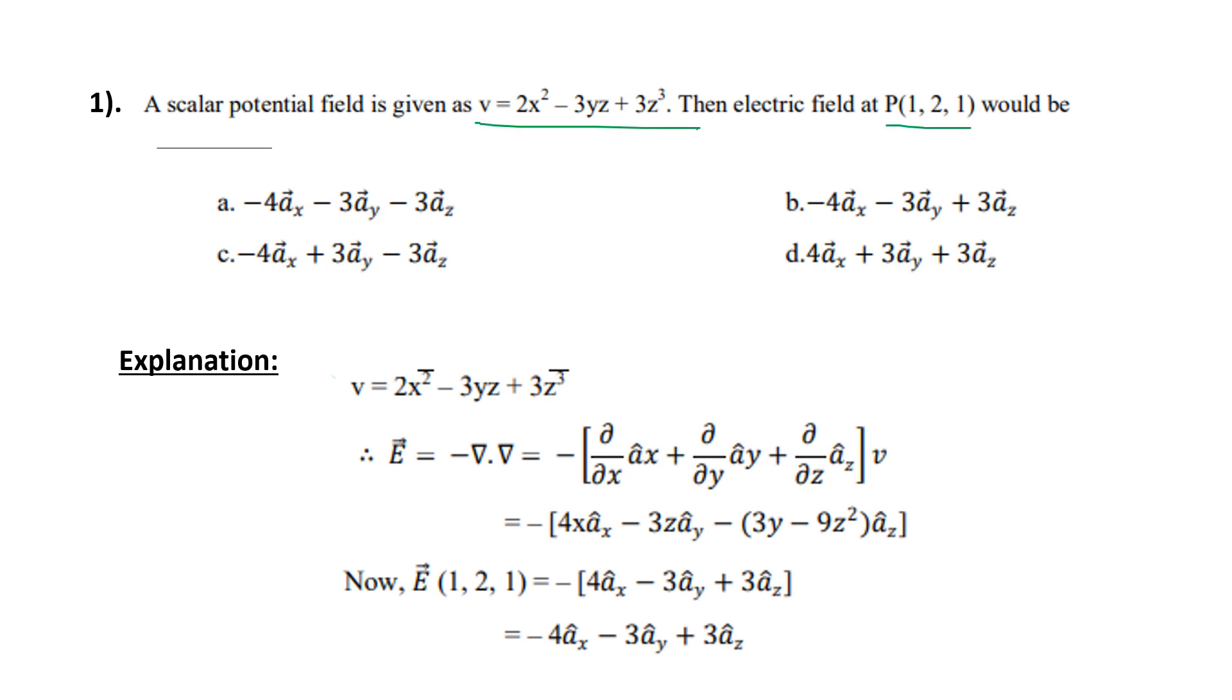How to use the formula? E equals minus del V. So del equals partial/partial x ax plus partial/partial y ay plus partial/partial z az into V. Given value 2x squared minus 3yz plus 3z cubed.